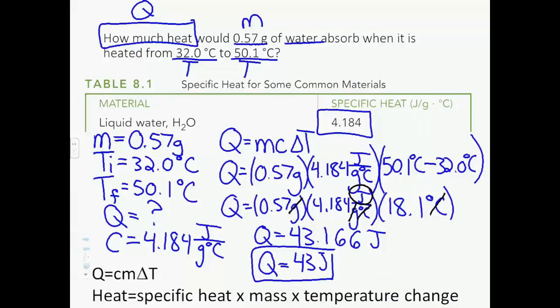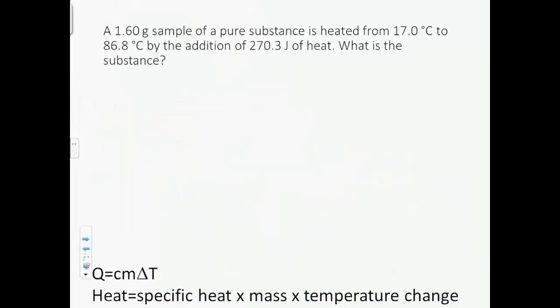That's the first type of specific heat problem, where we're given a mass, a specific heat, and a temperature change. What if we were to look at the inverse problem? Where we have a 1.60 gram sample of a pure substance that is heated from 17 degrees Celsius to 86.8 degrees Celsius by the addition of 270.3 joules of heat. What is the substance? Let's start out the same way we started out last time. Identify all of our variables.